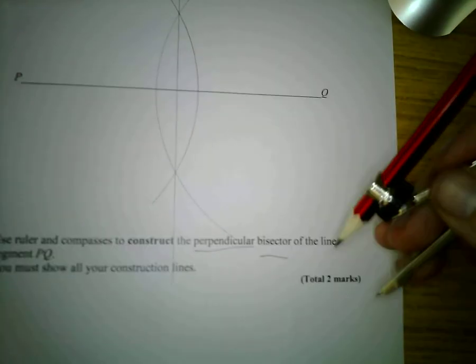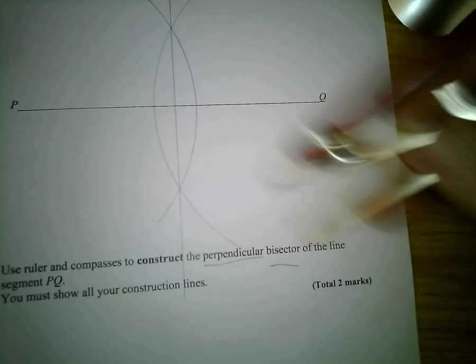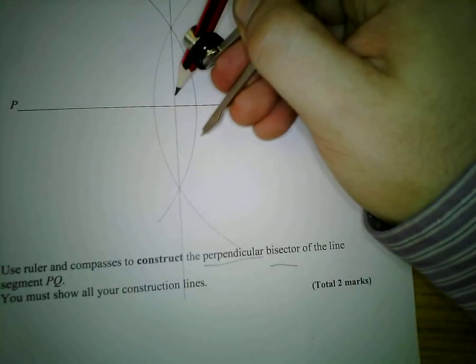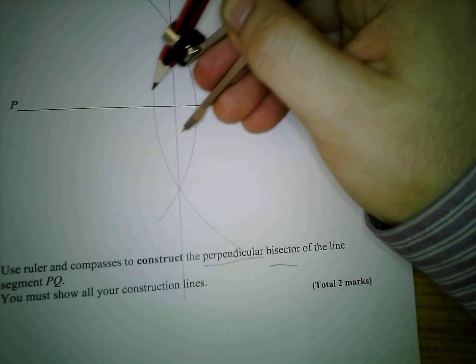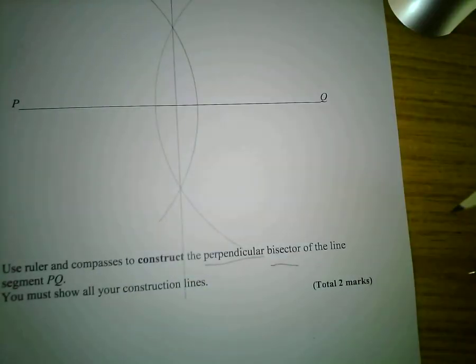Okay, that is our finished construction. That is the perpendicular bisector of the line P, Q. This line forms a right angle here. They're all right angles and it has split this line into two equal halves.